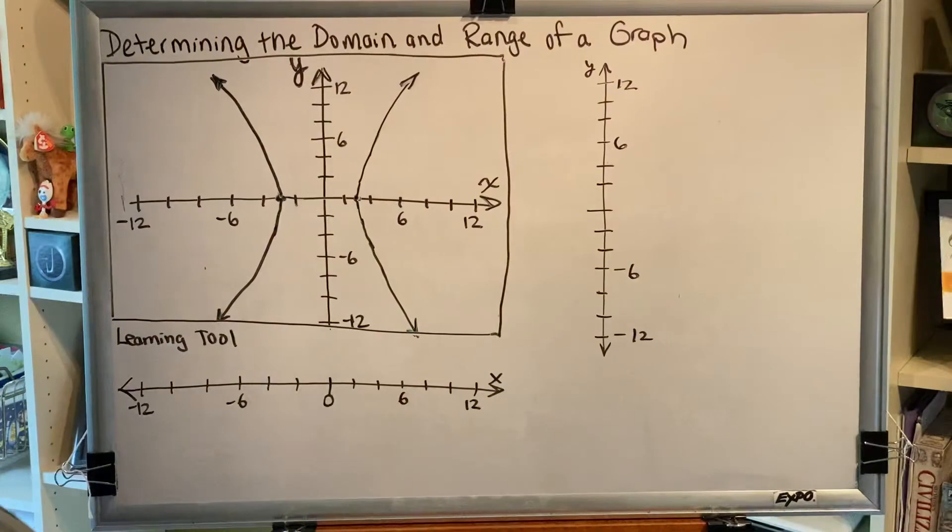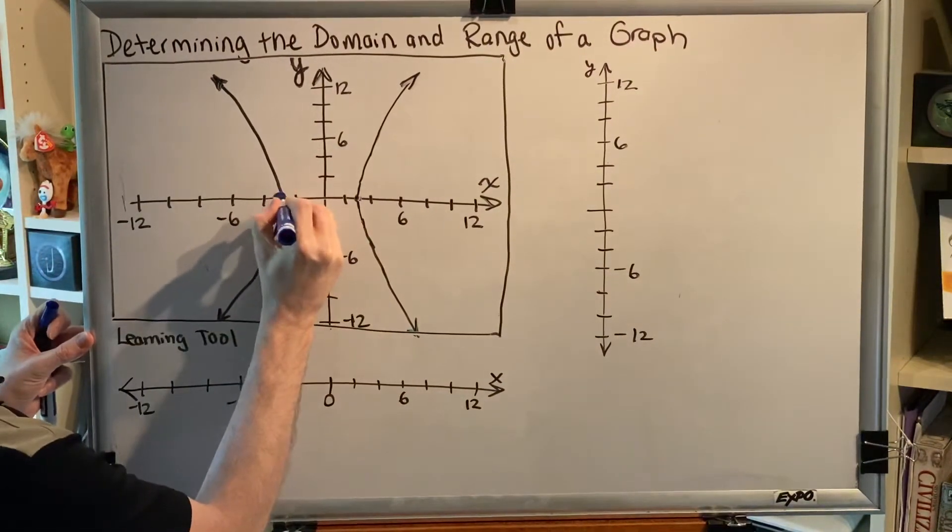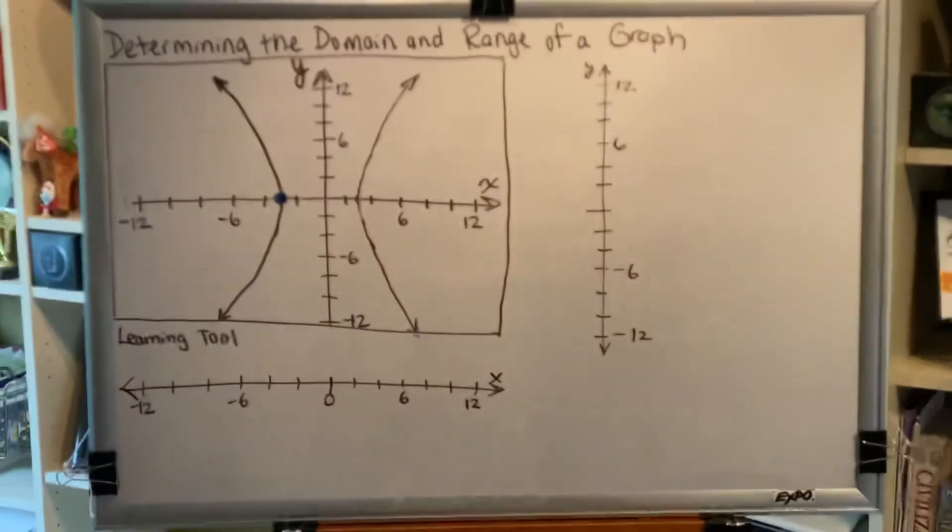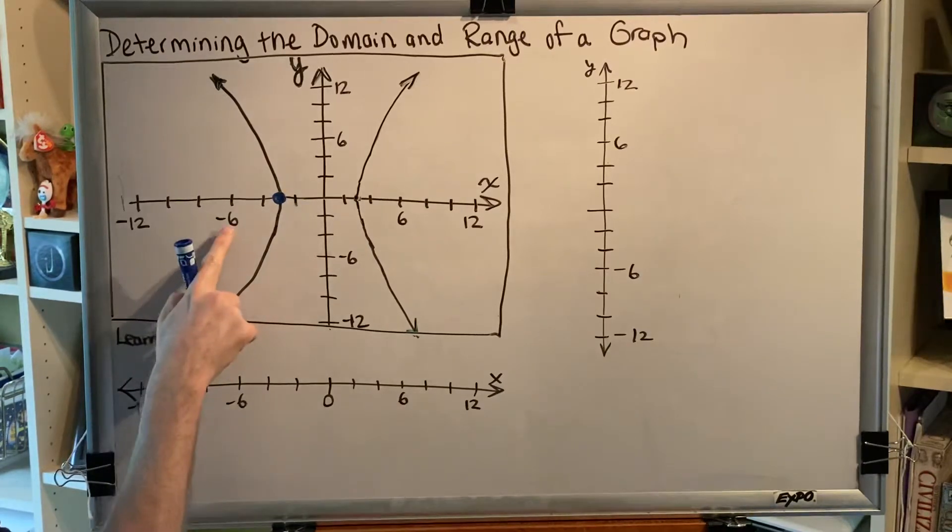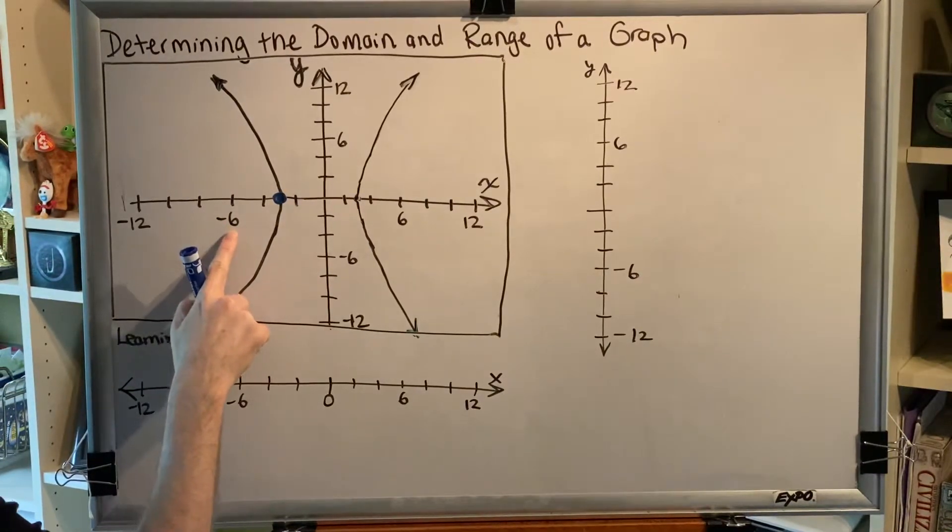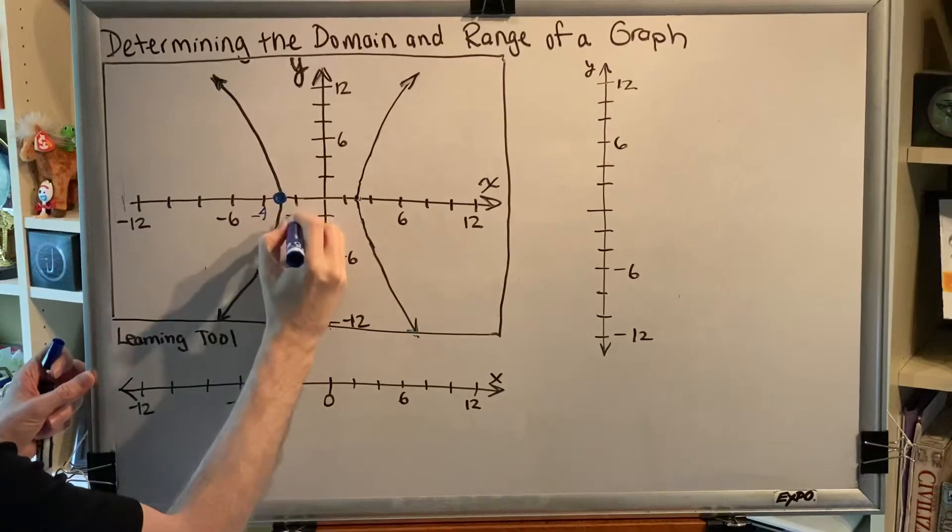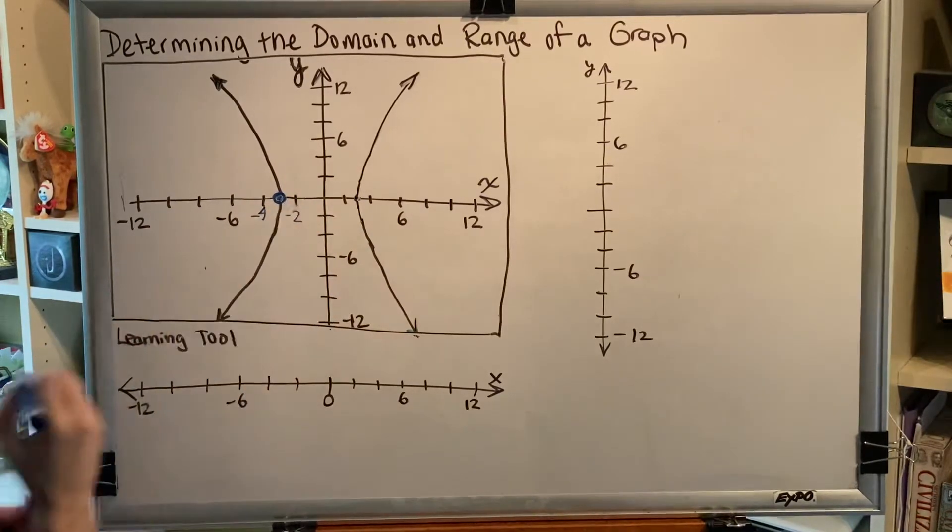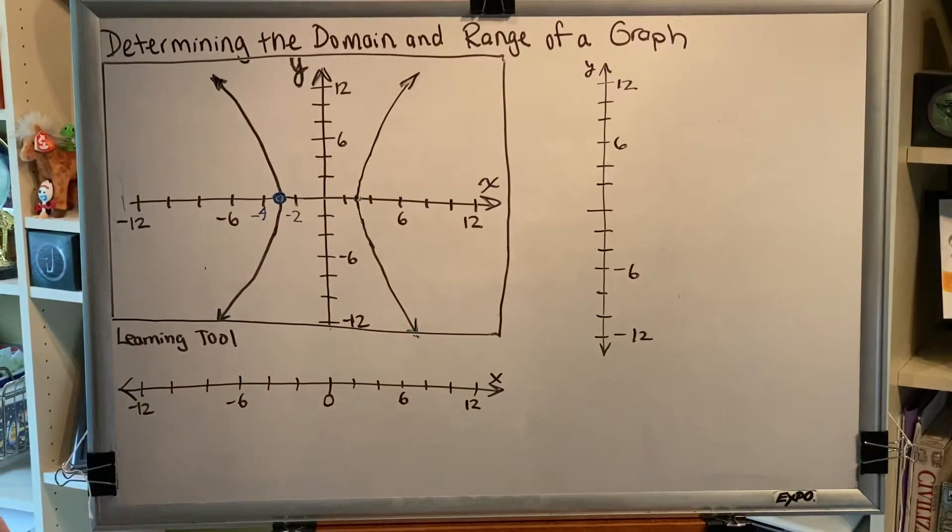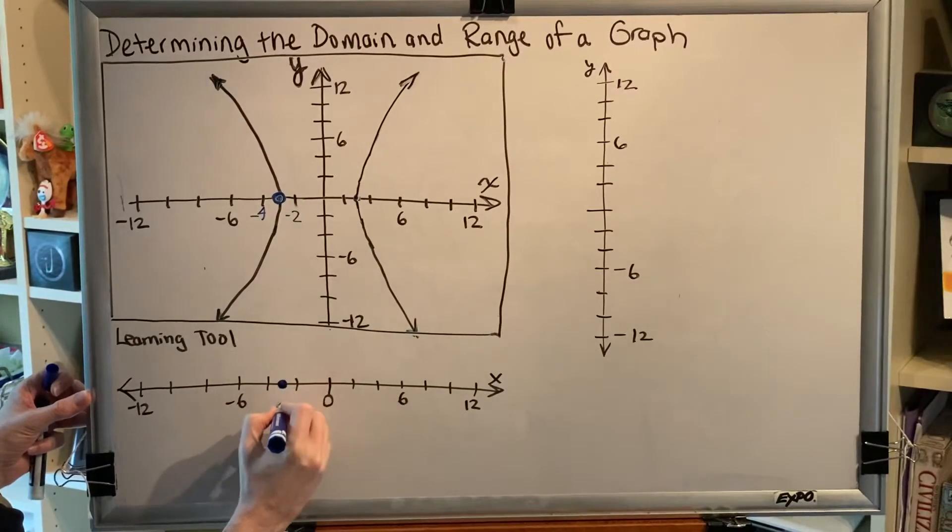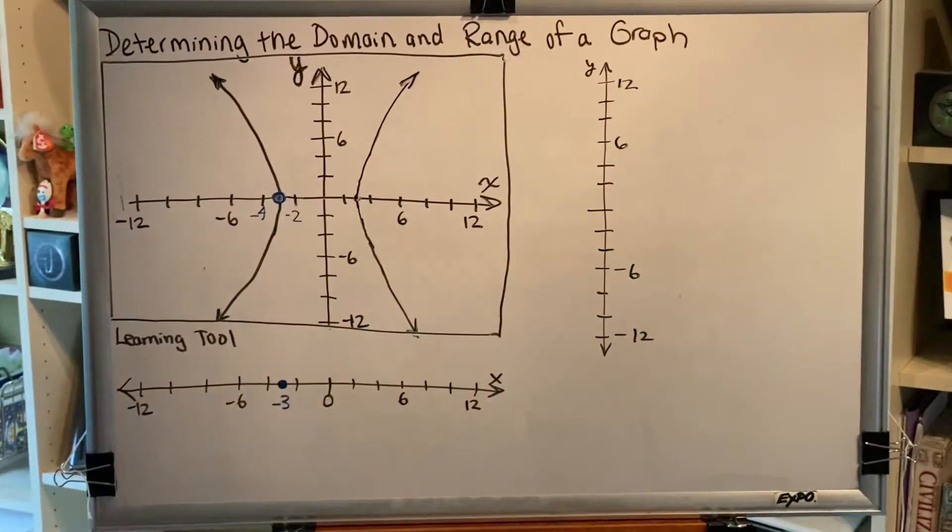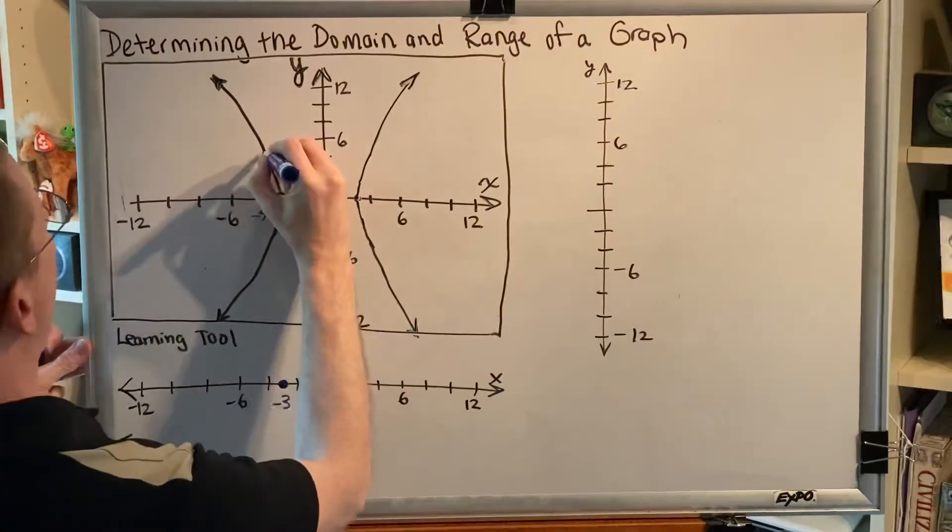Okay, so let's start with this point right here. This is a point that is on our graph. Therefore, its x-coordinate belongs in the domain. What is the x-coordinate of this point? Well, we have to look carefully at the scale of the drawing. If this is negative 6, then that must mean that this is negative 4, this is negative 2, and therefore this point must have an x-coordinate of negative 3. So we're going to put a little shaded dot here on our x-number line right at negative 3 because we have a point from our graph with an x of negative 3. Okay, let's pick another point like this one right here.